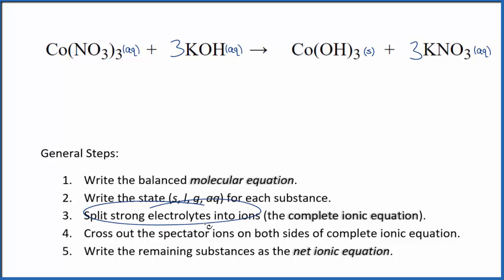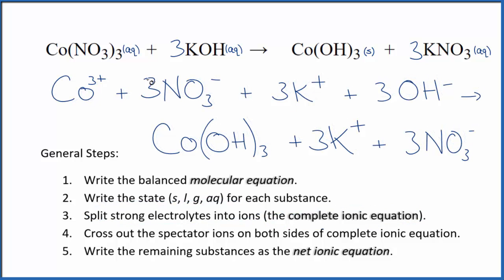Next, we can split the strong electrolytes into ions for the complete ionic equation. And we're not going to split solids apart in our net ionic equation. That's going to look like this. So this is the complete ionic equation for cobalt 3 nitrate and potassium hydroxide.